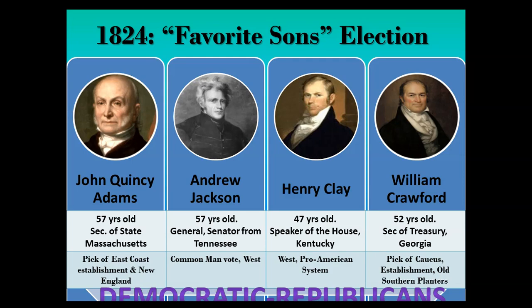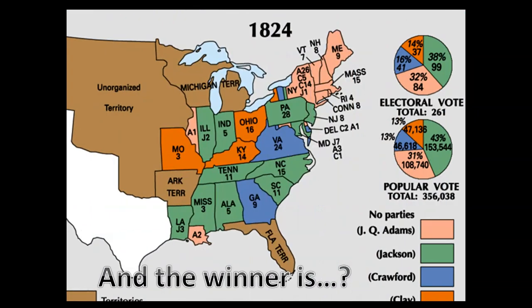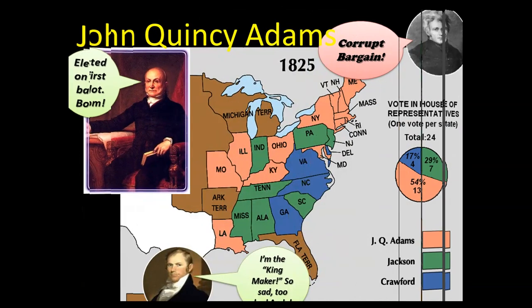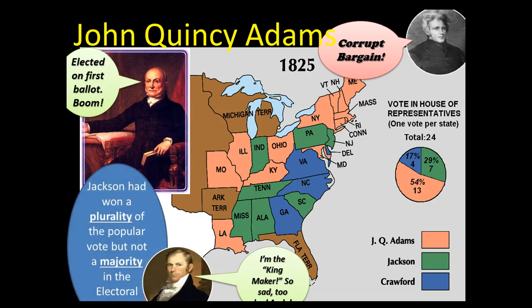This was a controversial election: Jackson got the most popular votes — 43% — and 38% of the Electoral College, but not enough to win outright. Jackson won a plurality, not a majority. With no majority in the Electoral College, the top three moved on to the House of Representatives. Henry Clay, then Speaker of the House, had tremendous power, and on the very first ballot John Quincy Adams was elected president. The Jacksonians were outraged, making whole corrupt bargain accusations.